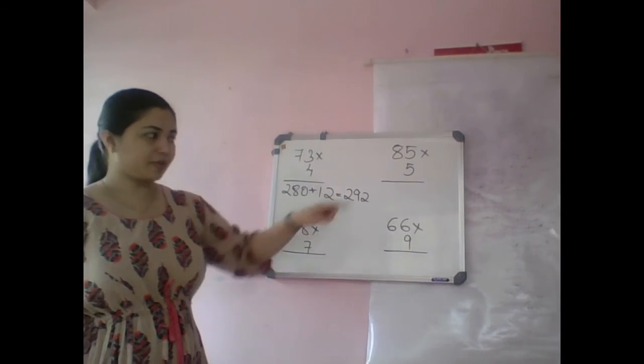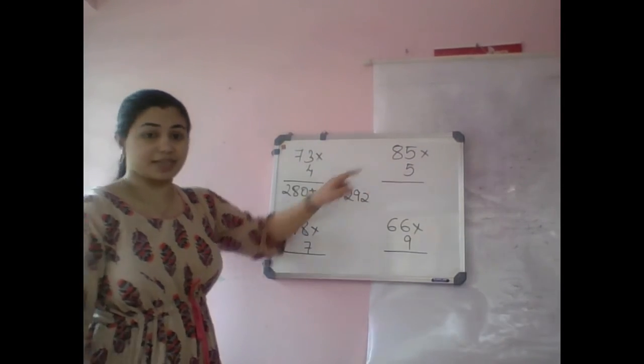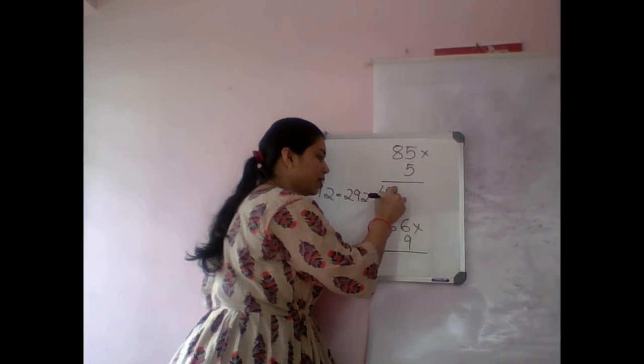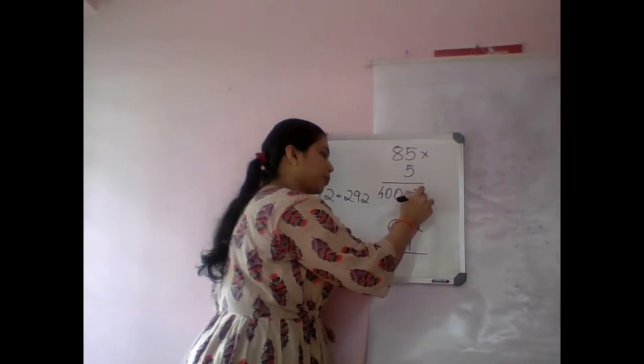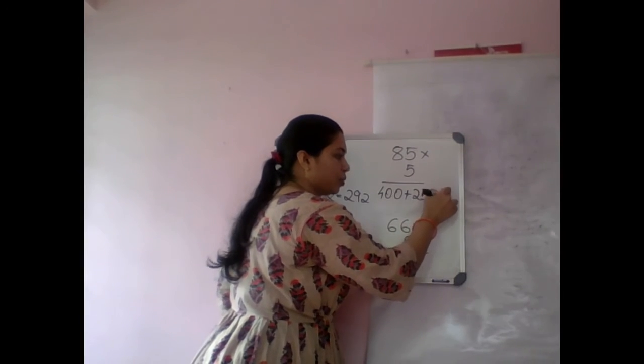Next, 85 times 5. 5 times 80, that is 400, plus 5 times 5, 25. So the answer is 425.